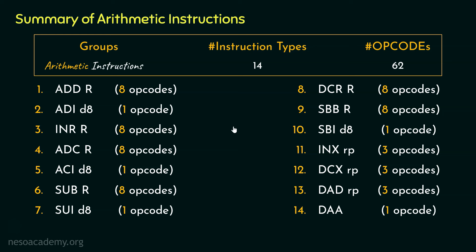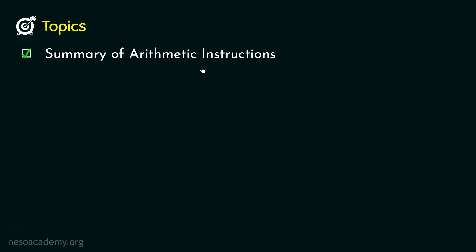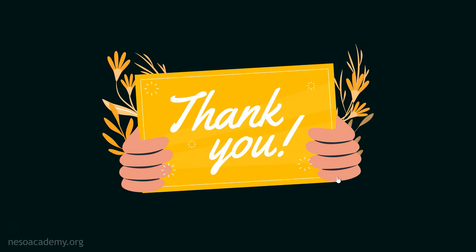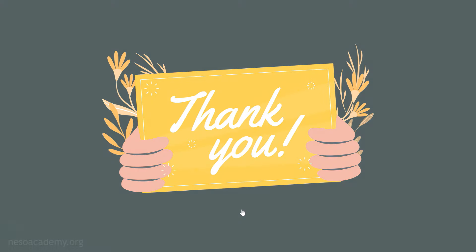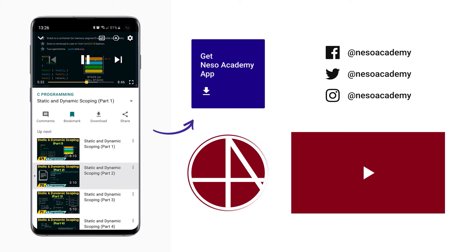In the arithmetic group of instructions, we have 14 different types, and cumulatively in all these types, we have learnt about 62 opcodes. In this session we summarized all the arithmetic instructions learnt so far. In the next session, we are going to solve some problems based on the arithmetic group of instructions. Thank you all for watching.